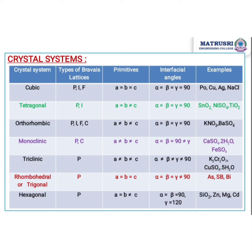Cubic consists of three types of Bravais lattices, in which the lattice parameters are equal: a = b = c and alpha = beta = gamma = 90°. Examples include polonium, copper, silver, and sodium chloride. Tetragonal consists of two Bravais lattices in which a = b but not equal to c, and all angles alpha, beta, gamma are equal to 90°.